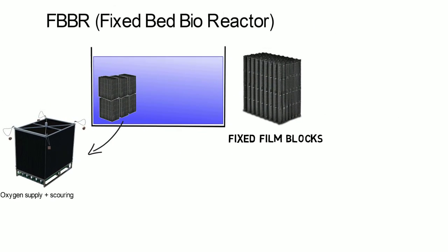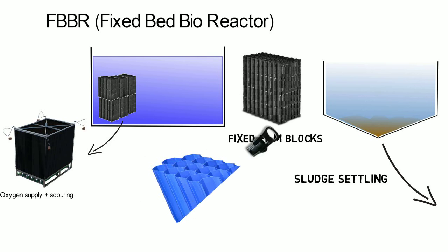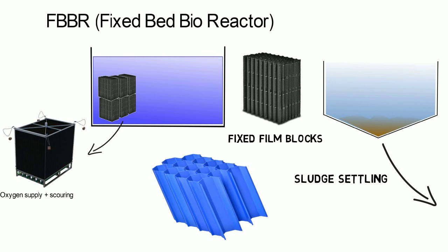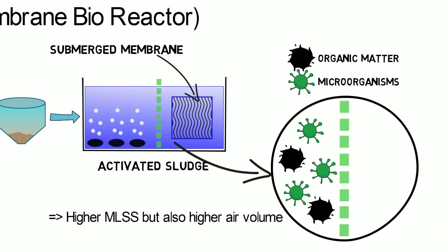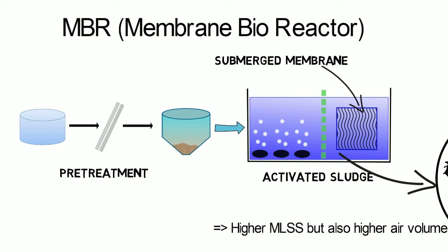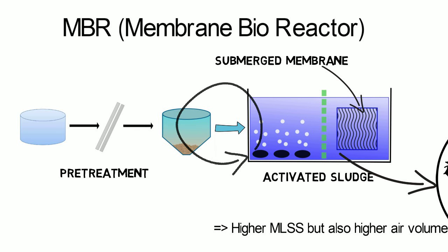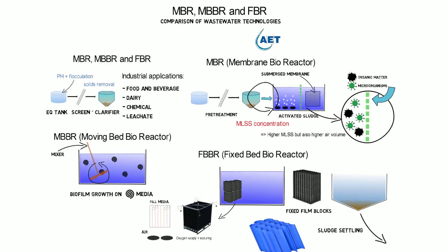Both MBBRs and FBBRs require sludge settling after biological treatment. For this purpose, lamellar clarifiers as supplied by AET are installed. In comparison, MBRs don't require lamellar clarifiers because sludge is held back by the membranes. However, a good portion of sludge must be continuously pumped back to the main basin to limit MLSS concentration increase and to remove waste sludge.